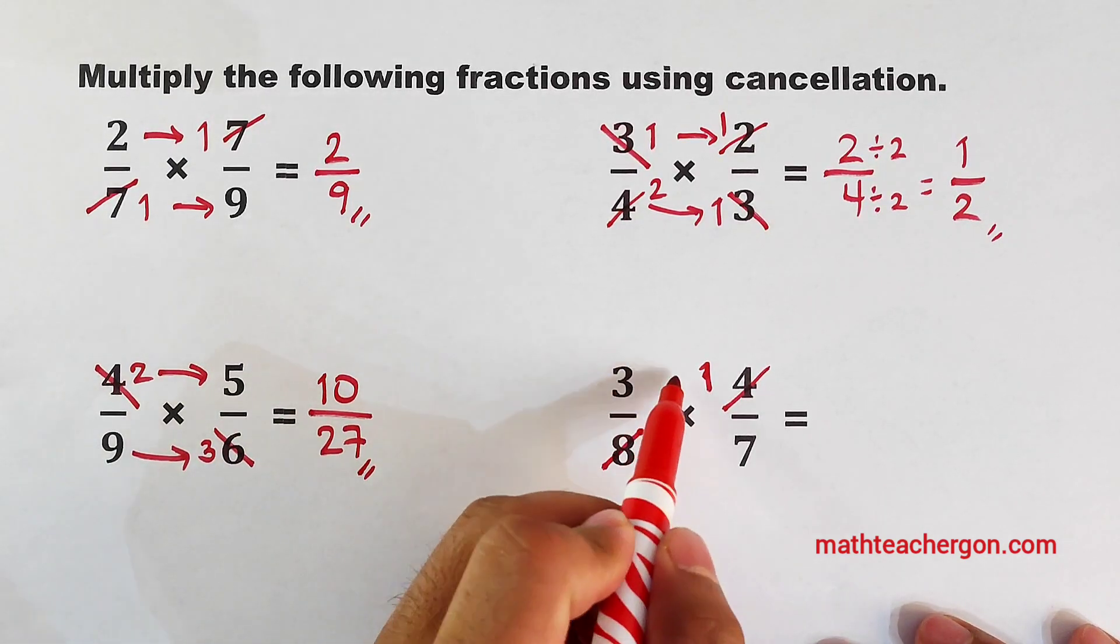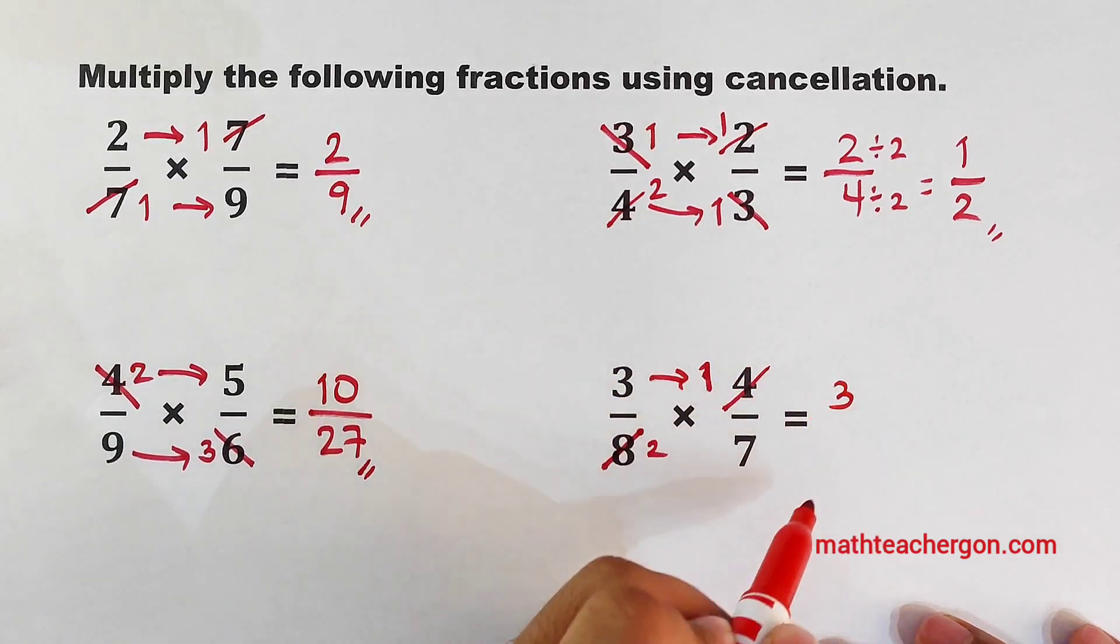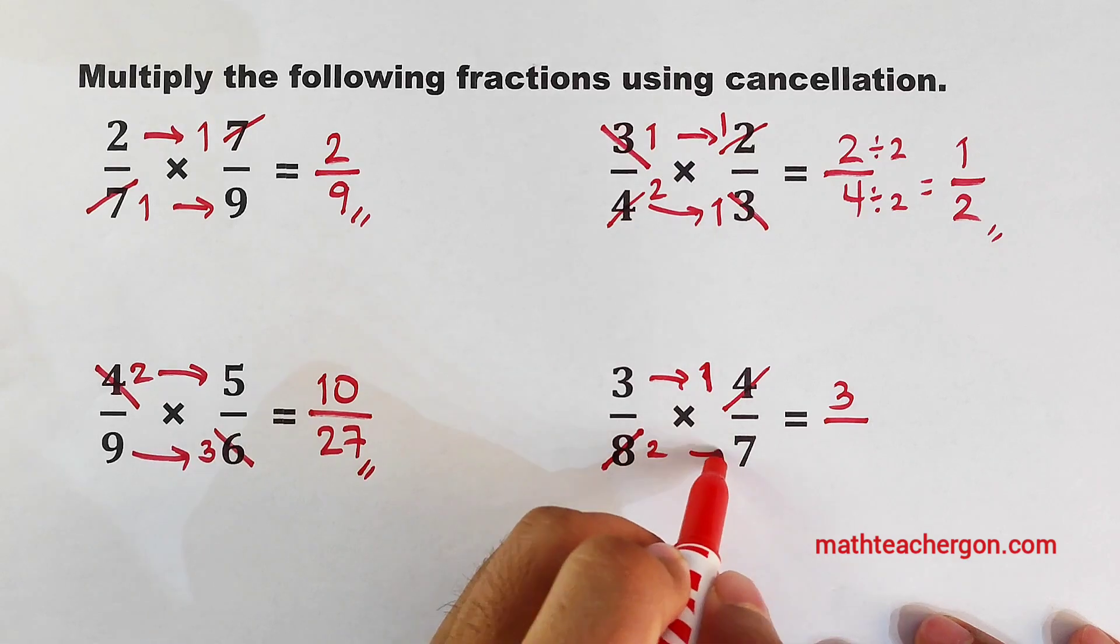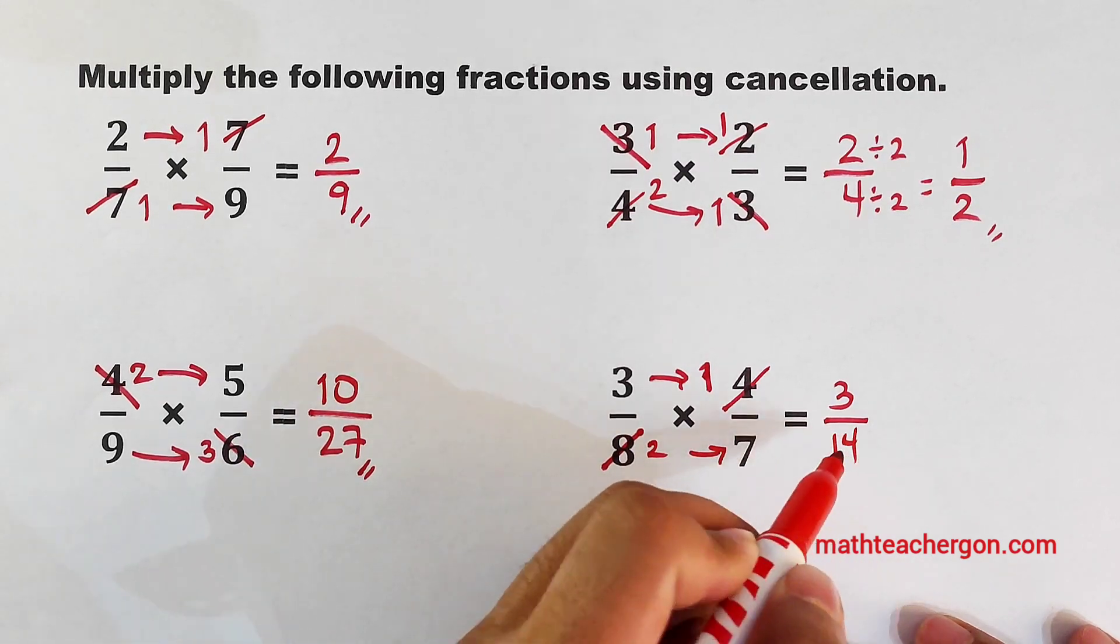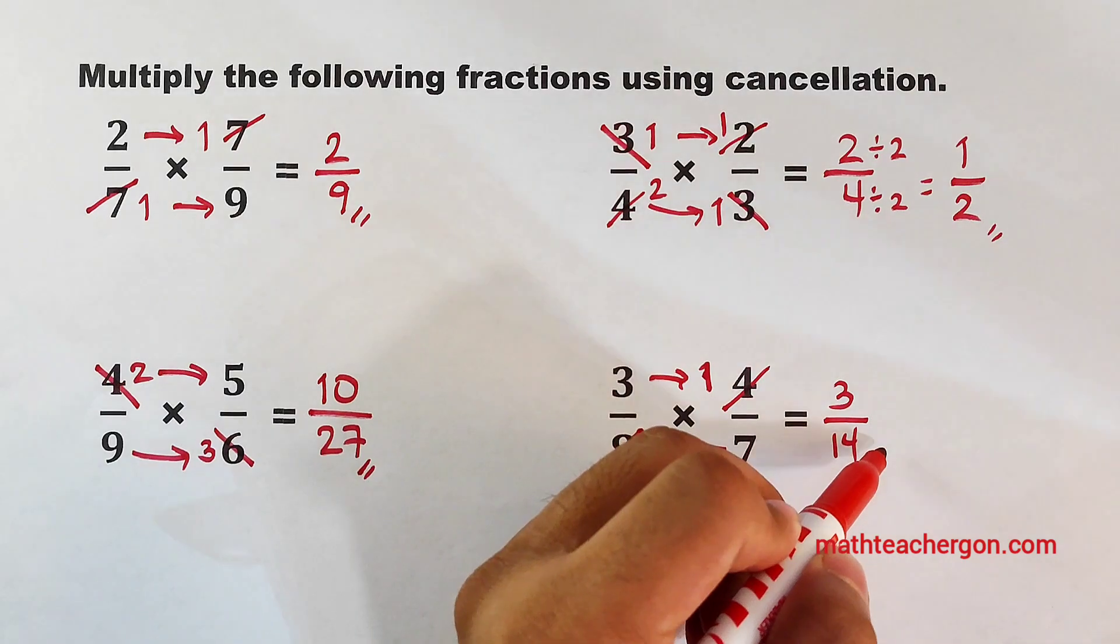And let's proceed with multiplication. 3 times 1, it will become 3, over 2 times 7, it will become 14. So, as you can see, 2 over 14 is already in simplified form.